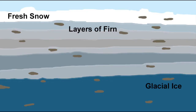As more and more snow falls, it packs down really tight. A year of snow is called a firn. These firn layers eventually fuse together into glacial ice.